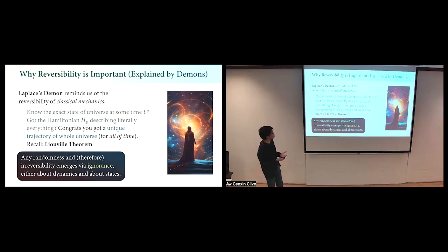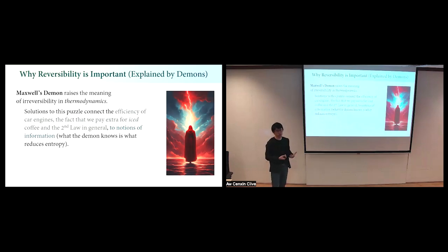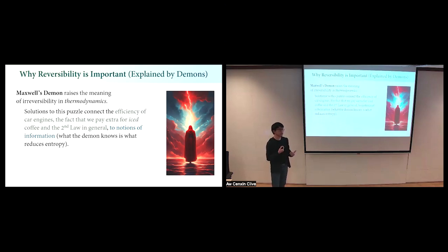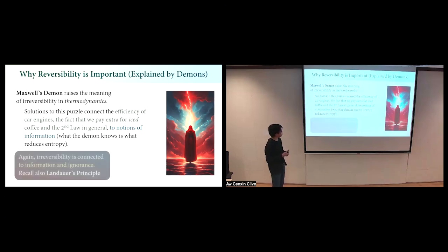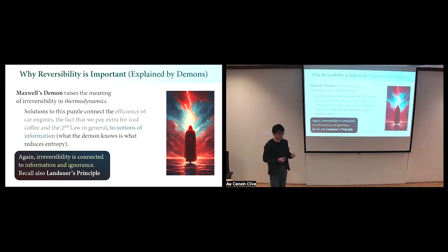The other demon we might be more familiar with is Maxwell's demon. I won't hash out what exactly this thought experiment tells us, but it connects our notions of the second law - things like the efficiency of an engine or why refrigerators take money to run - and connects it to the notion of information. What does this demon have that allows it to consume entropy rather than produce it? According to Maxwell's thought experiment, irreversibility is connected to information and ignorance.